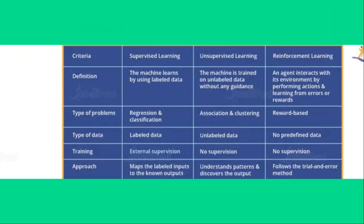In a broader view, the definition is: in supervised learning the machine learns using labeled data; in unsupervised learning the machine is trained by unlabeled data; and in reinforcement learning there is no data given — it learns from errors and rewards. The type of problem solved in supervised learning is regression and classification. In unsupervised learning it is association and clustering. In reinforcement learning it is a reward-based type. The data types are labeled, unlabeled, and no predefined data respectively.